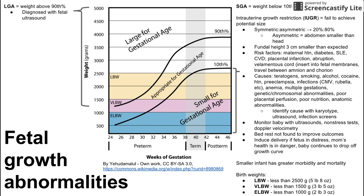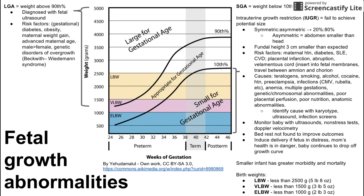Risk factors for LGA include diabetes or gestational diabetes — either pre-existing or onset during pregnancy — obesity, excess maternal weight gain, advanced maternal age typically in mothers over 40, and male fetal sex, which carries a higher chance of LGA. Some genetic disorders also cause overgrowth, such as Beckwith-Wiedemann syndrome, which causes big babies.